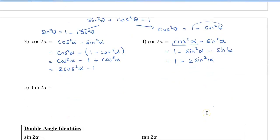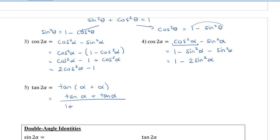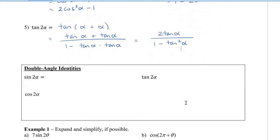For tan 2α, we write it as tan(α + α) and use the tangent sum identity. This gives tan α plus tan α all divided by 1 minus tan α times tan α, which simplifies to 2 tan α on top and 1 minus tan²α on the bottom.